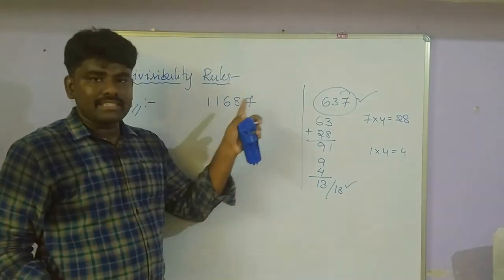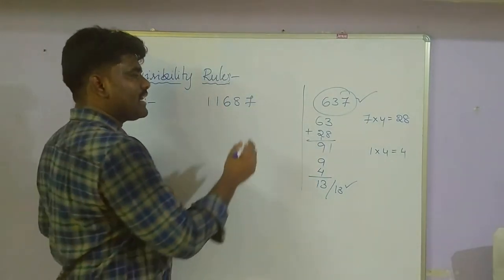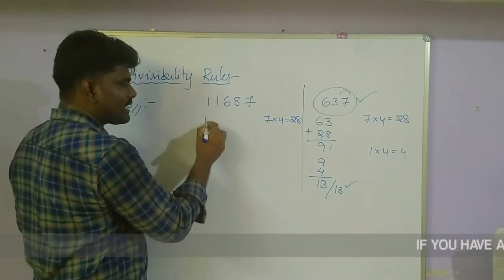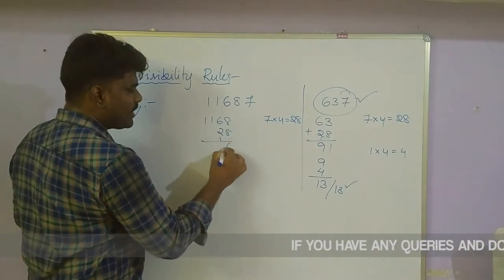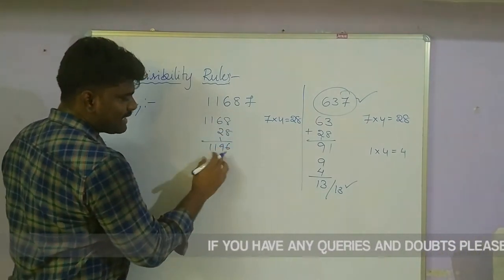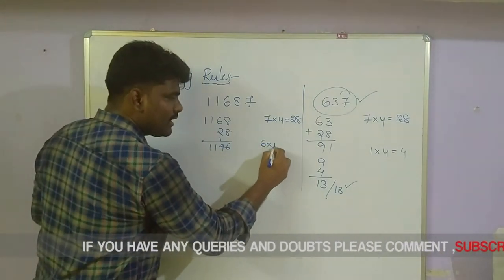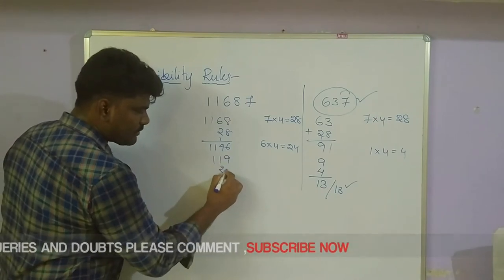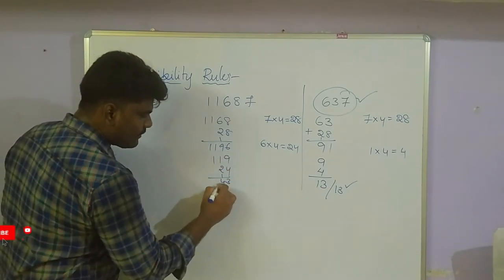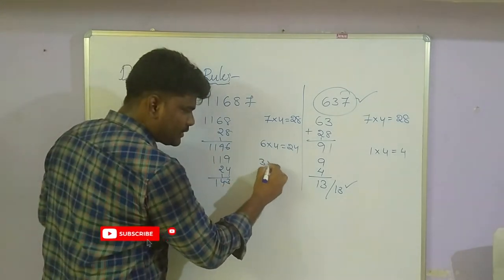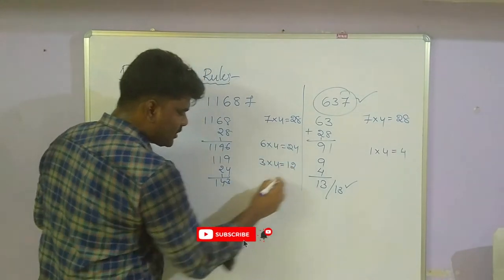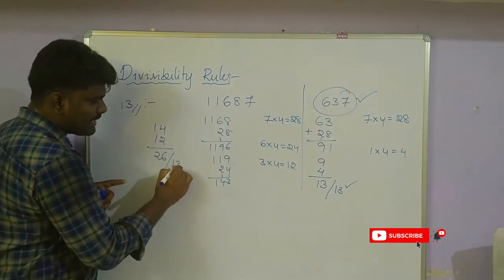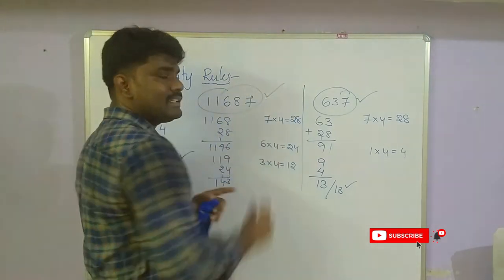In the same way, observe the number 11687. Take the units place: 7 × 4 = 28. Add 28 to the remaining digits 1168: that gives 1196. Again take the units place: 6 × 4 = 24. Add 24 to 119: that gives 143. Again take the units place: 3 × 4 = 12. Add 12 to 14: that gives 26. 26 is divisible by 13, so the entire number is divisible by 13.